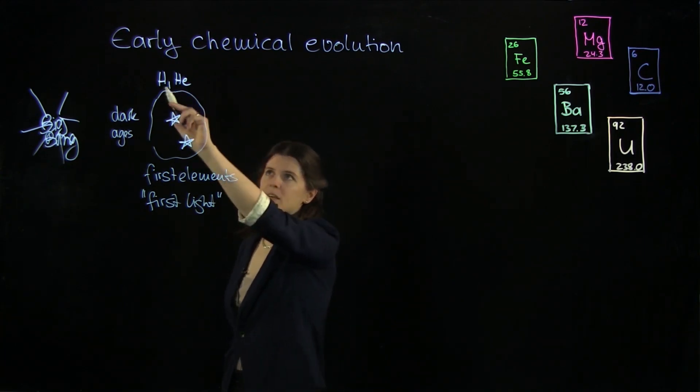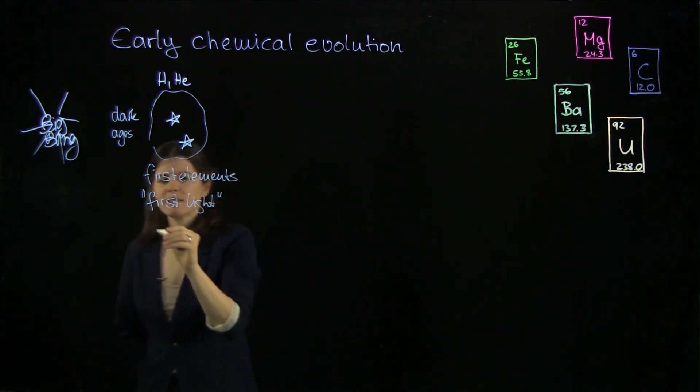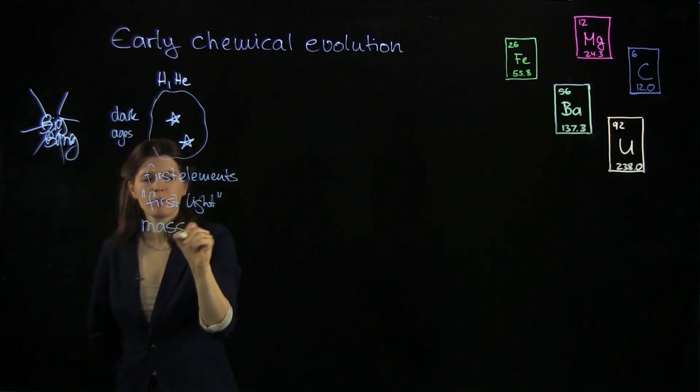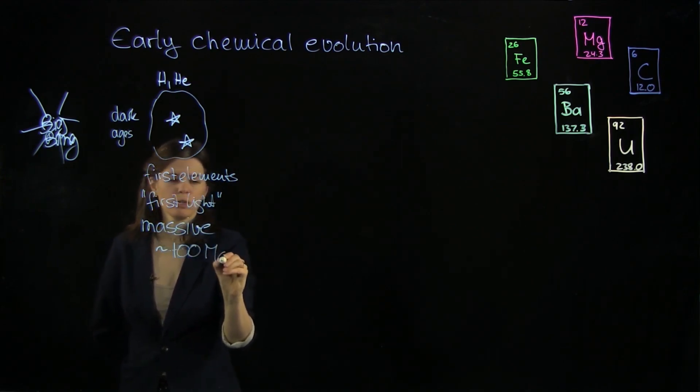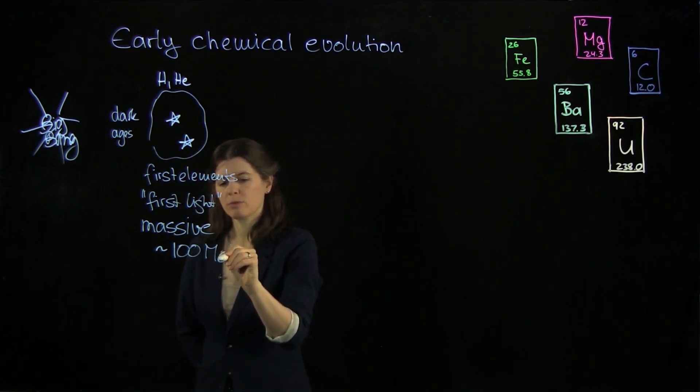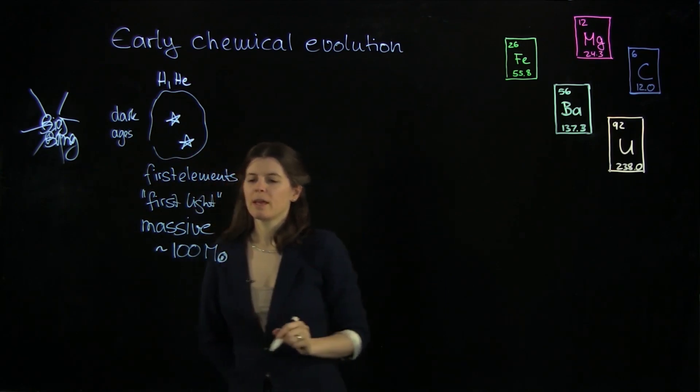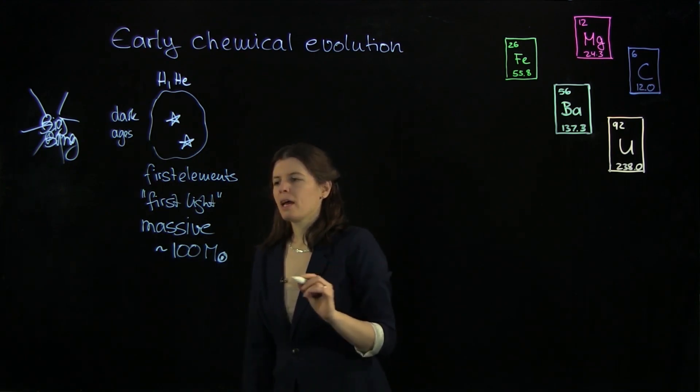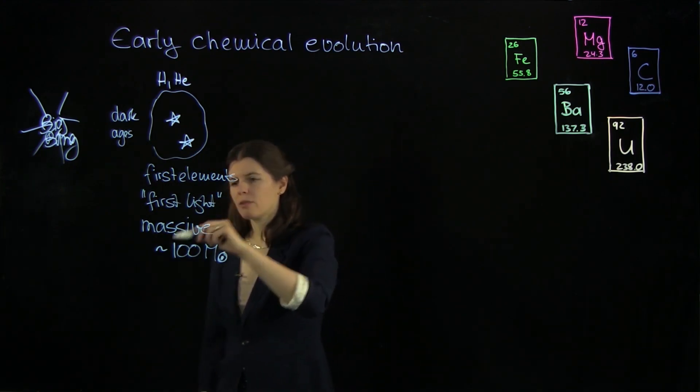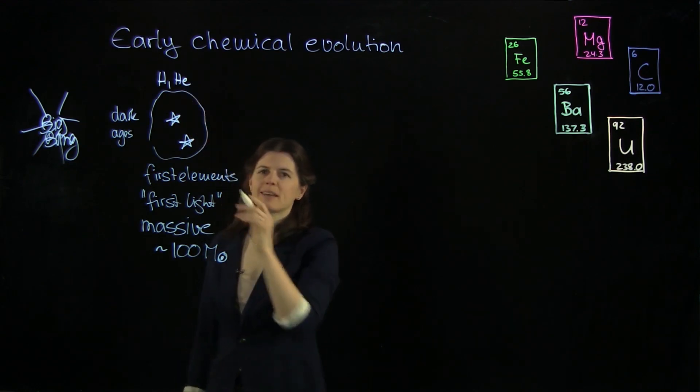Now, these stars here, because they're formed from just hydrogen and helium gas, were very massive, rather large. Maybe something like 100 solar masses. So we use the unit of solar mass. This is the symbol for the sun here as a unit. So 100 times as heavy as the sun.